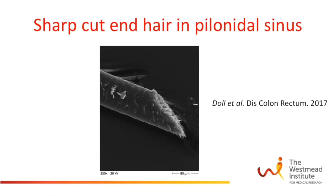Recently, Dahl and co-authors studied the hairs of 17 patients with pilonidal disease using an electron microscope. They found that most hairs were rootless fragments with sharp cut ends, as illustrated in this figure. The authors hypothesized that these needle-like sharp ends of the hair may contribute to the hair piercing the skin and resulting in pilonidal disease. This could also explain the occurrence of pilonidal disease between the fingers of barbers.